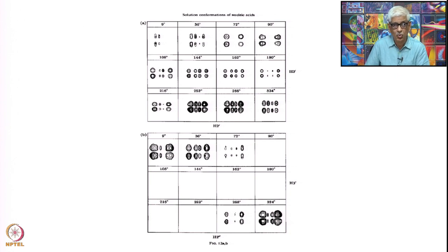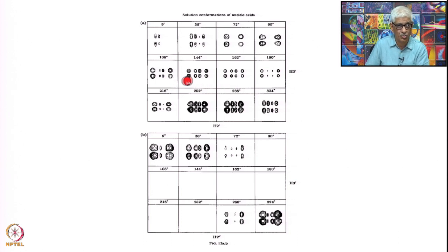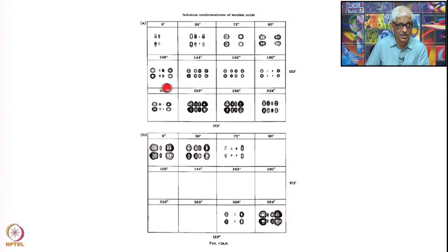Similarly, this is now for the 2'-3' and 2''-3' peaks — these are for the 2'-3' peak and these are for the 2''-3' cross peaks. These are for the COSY 90, not for the COSY 45. In this case, all the components present can be calculated in the same way as indicated for the 1'-2' and 1'-2'' cross peaks, taking the splitting patterns of the individual protons and combining them with the splittings of the others. Depending upon the sugar geometry you will have different kinds of fine structures. One has to simulate these.